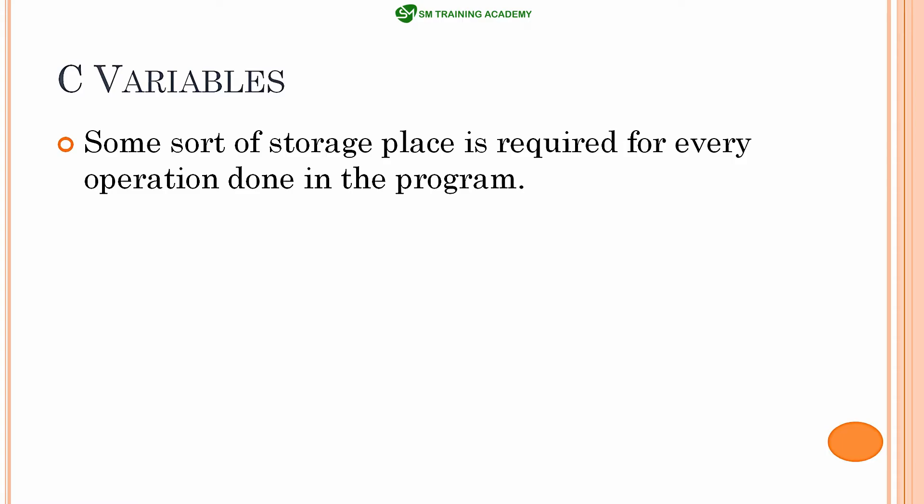For performing any simple operation or any complex types of operations in a program, you require a basic thing called memory locations. For every operation that you want to perform in a C program, you require a basic thing called a memory location.